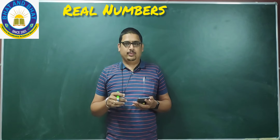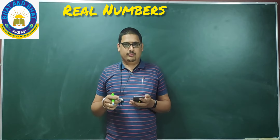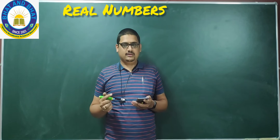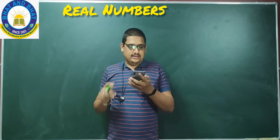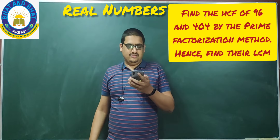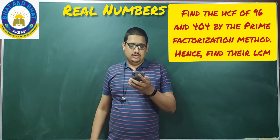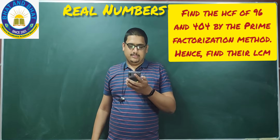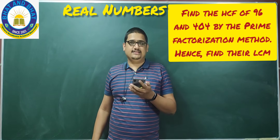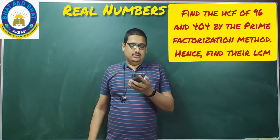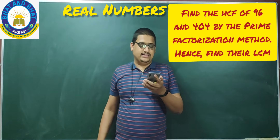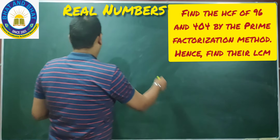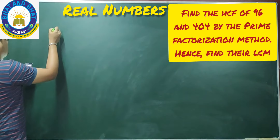Before going to exercise 1.2, let us solve a few more problems, then we will take up the exercise questions. Please note down this question: find the HCF of 96 and 404 by the prime factorization method, hence find their LCM.